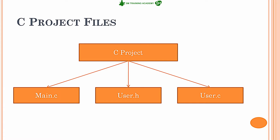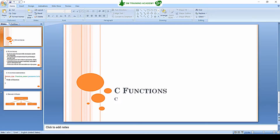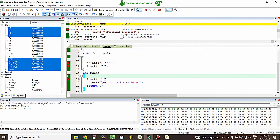This is the hierarchy of a C project. Obviously, you must have a main.c which is the executable source file, and in addition to that you can have n number of user.c and user.h files. For each .c file you must have a header file included for it. It is not necessary but it is very good practice for a programmer to have a .h file for each .c file. Now let us see different kinds of functions available with an example.